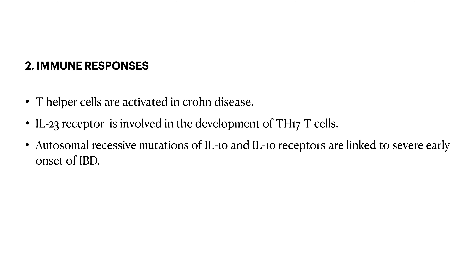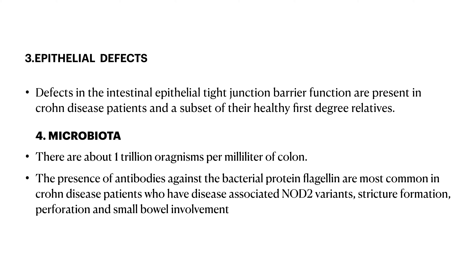Regarding immune responses, T helper cells are activated in Crohn's disease and interleukin-23 is involved in the development of T helper 17 cells. Certain polymorphisms of the IL-23 receptor confer marked reduction in risk of both Crohn's disease and ulcerative colitis. Autosomal recessive mutations of IL-10 and IL-10 receptors are linked to severe early-onset IBD. Overall, deranged mucosal immune activation and defective immunoregulation contribute to both conditions.